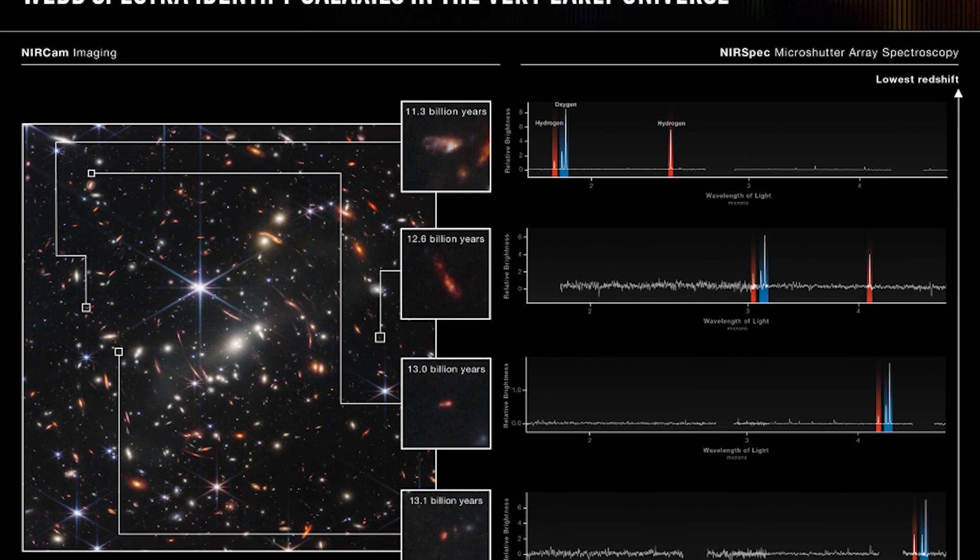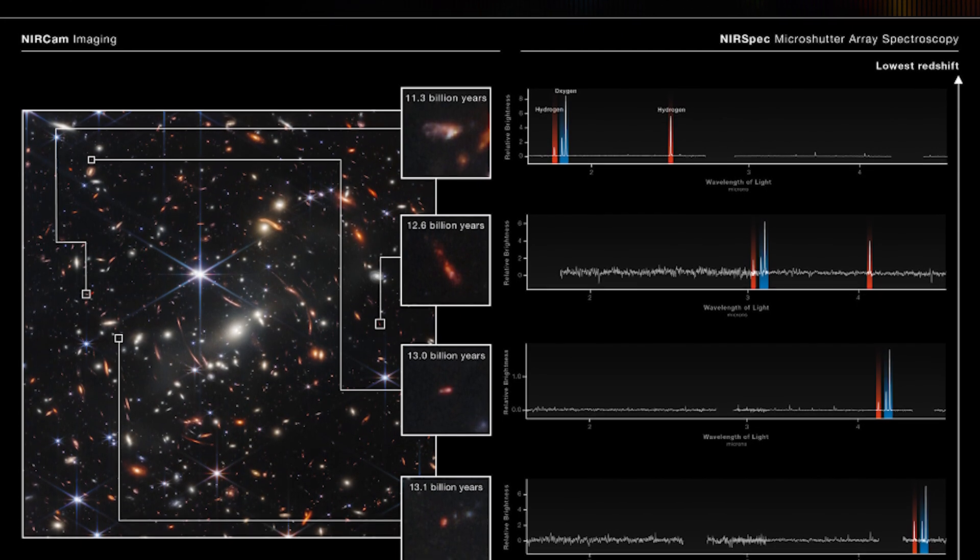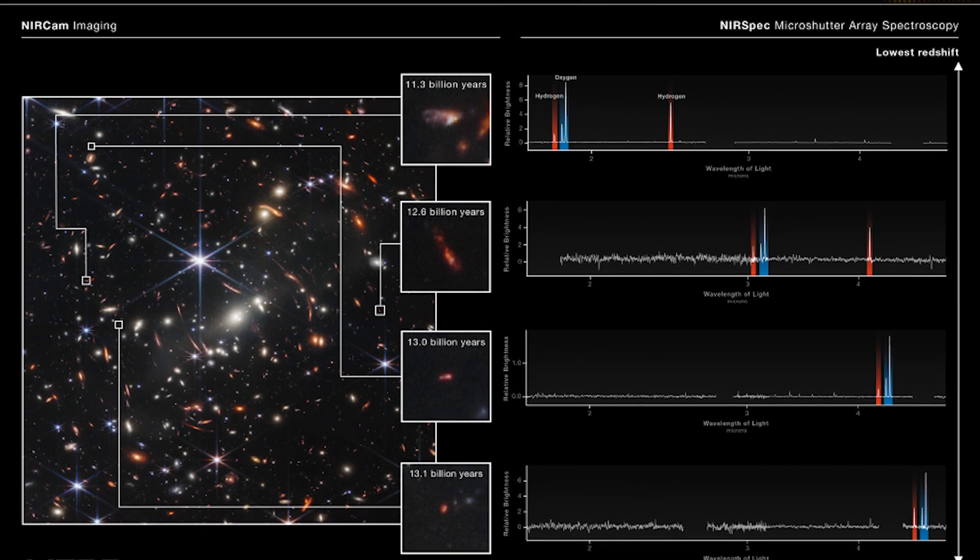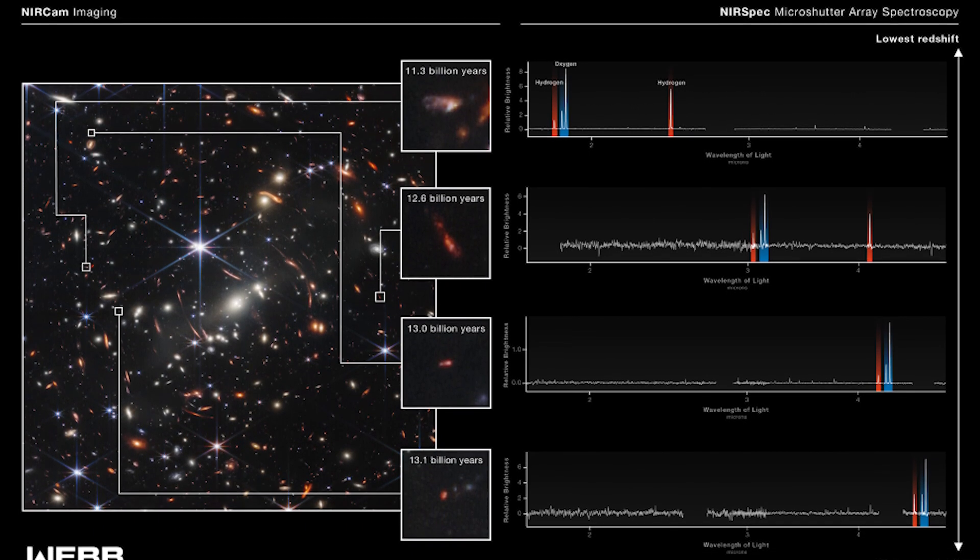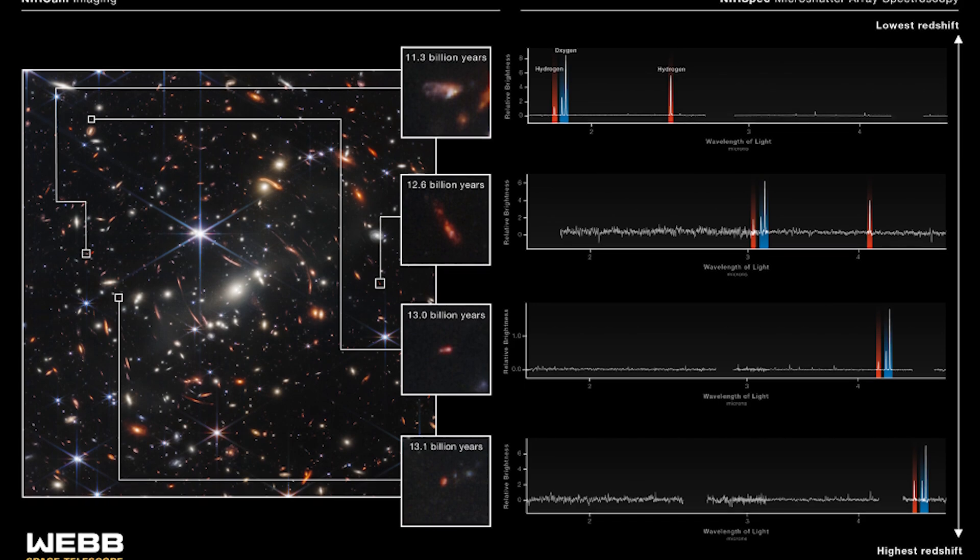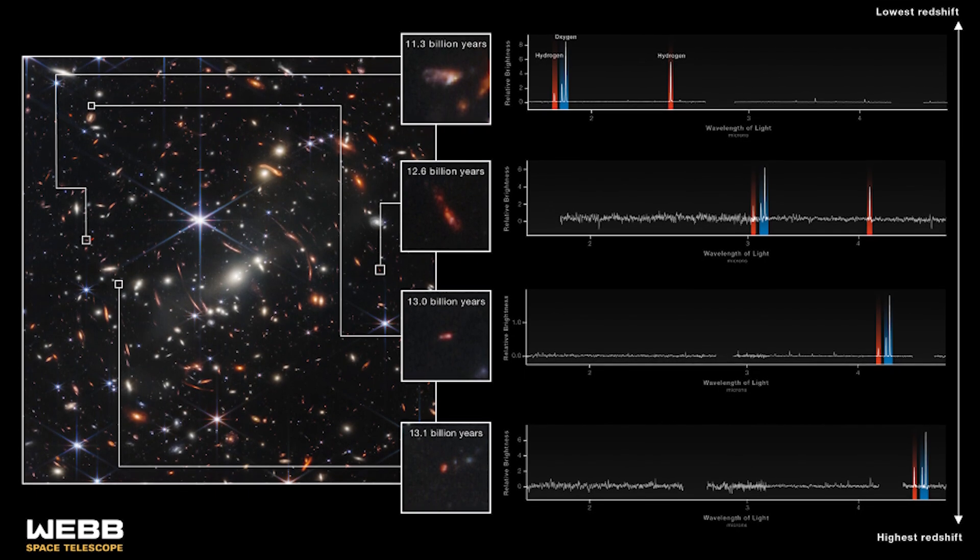With Webb's data, researchers can now measure each galaxy's distance, temperature, gas density, and chemical composition. We will soon learn an incredible amount about galaxies that existed all across cosmic time.